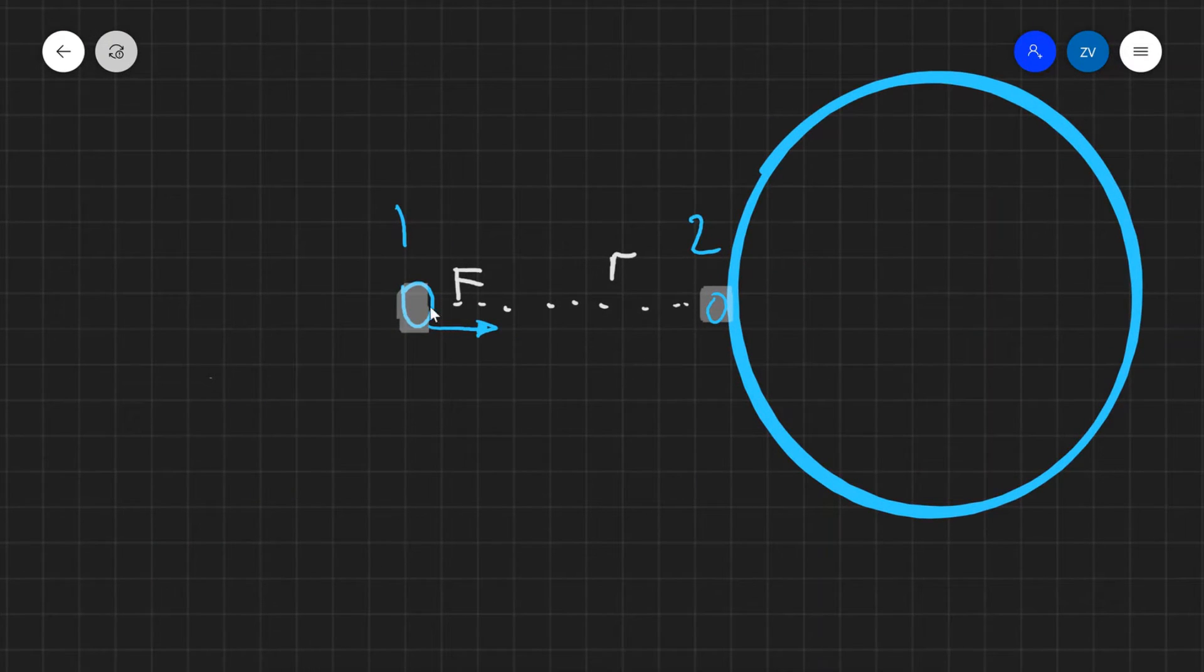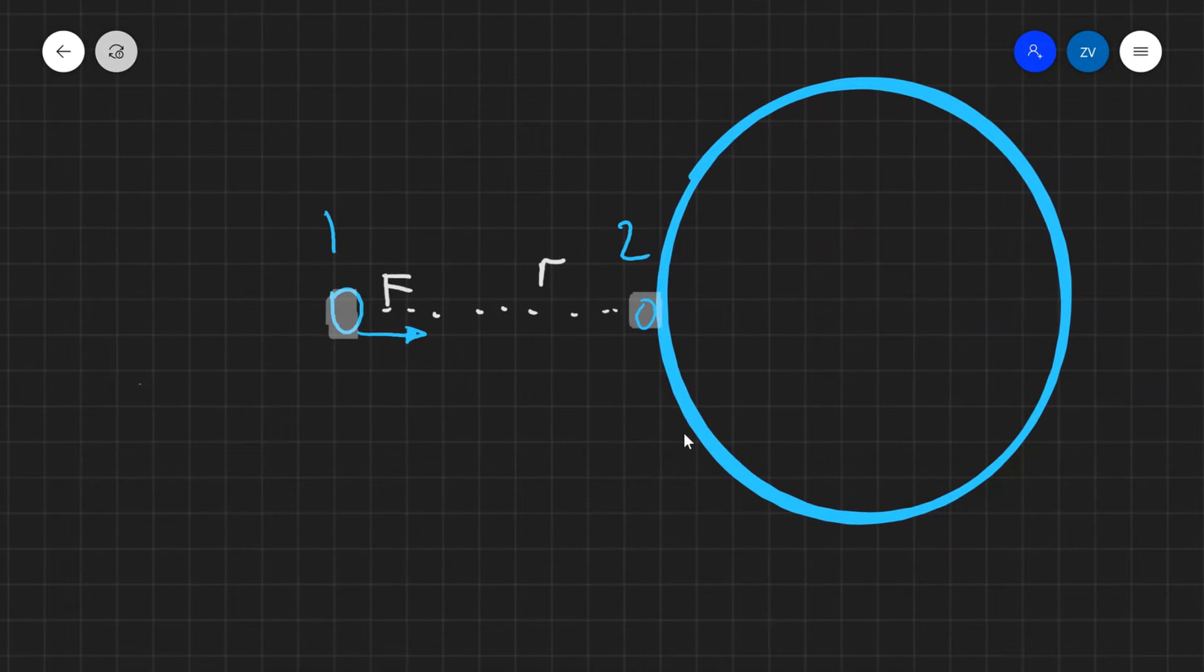We have a certain object which would be moving from position 1 to position 2 in a gravitational field, in particular the gravitational field of this planet over here. When we are moving from position 1 to position 2, there need to be two things that are happening.